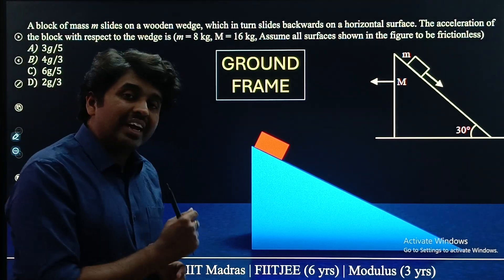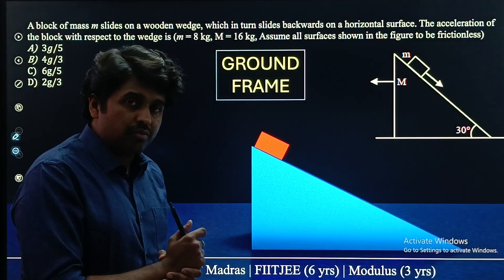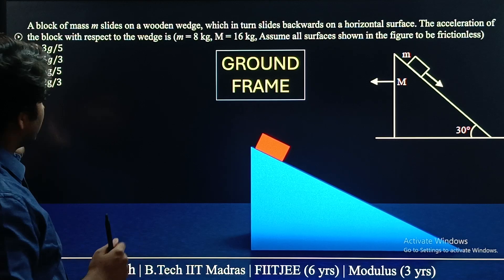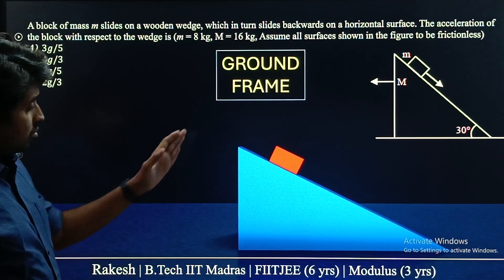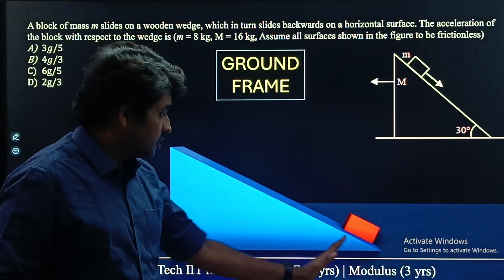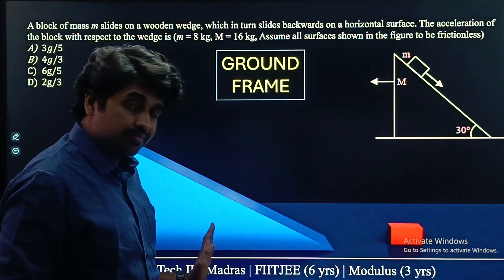First, we are looking at this in the ground frame. We have already seen this in the ground frame — the block is moving on this side and the wedge is moving on this side.